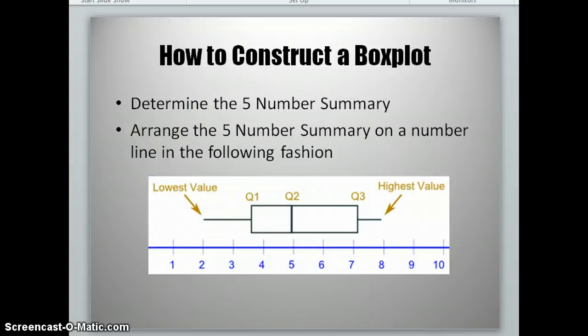Now to construct a box plot, we need, again, those five numbers. Once we have those five numbers, we're going to arrange them on a number line using the picture below as a guide. So you'll see the first thing that you'll do is take these five numbers and plot them. We have our lowest value, Q1, Q2, Q3, and the highest value.